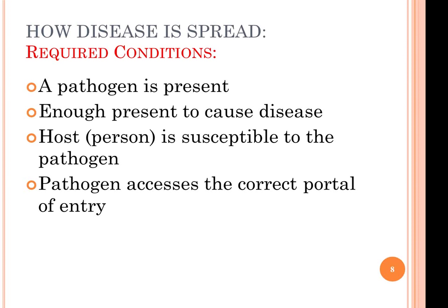One example is HIV — you would need enough exposure to actually contract the disease. In the same drop of blood, if hepatitis B is present, it is much more prevalent and numerous in blood, so you would have more exposure to hepatitis B versus HIV. That means it's easier to catch hepatitis B than HIV from the same sample of blood.